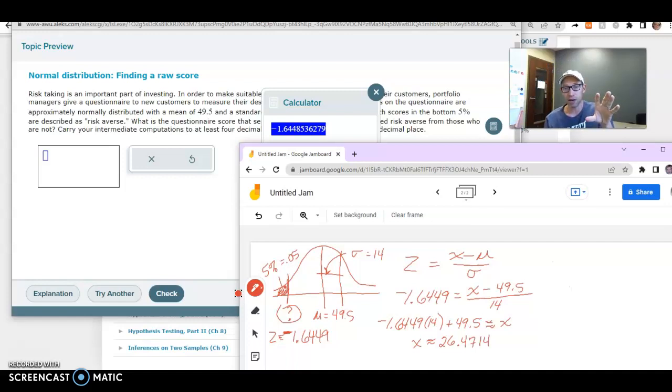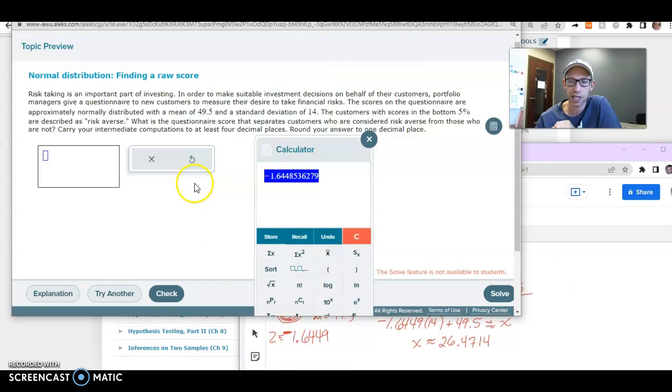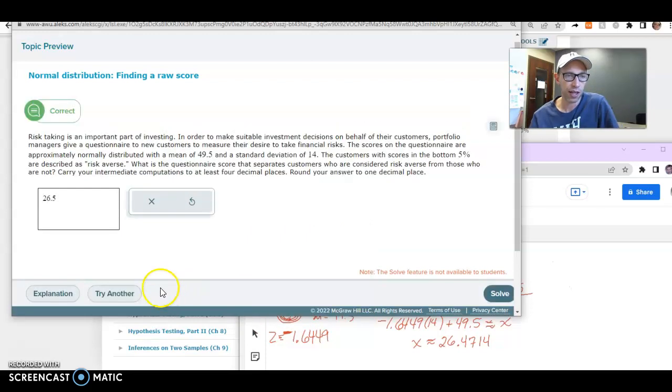Now another reality check you could do, notice that our picture shows that our raw score should be below the mean. And that means it should be less than 49.5, which it is. And honestly, if you do that visual check, that takes care of the problem that almost anyone has when they make an error on these calculations, which would be going on the wrong side of the distribution. That's where the picture helps you. So if you get a number like 80 or something, and you're above the mean, but on the picture you know you're going for something below the mean, you know to go back and double check. All right, so this should be the answer we're looking for, and they want one decimal place. So we should give them 26.5. Check that. Here we go.